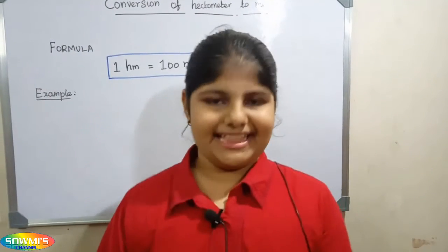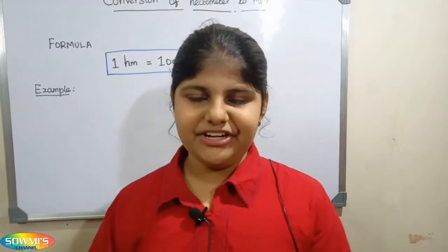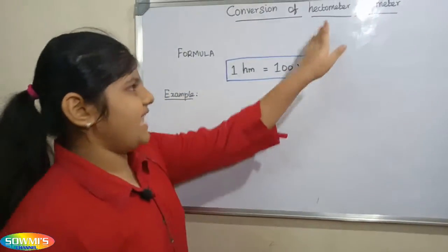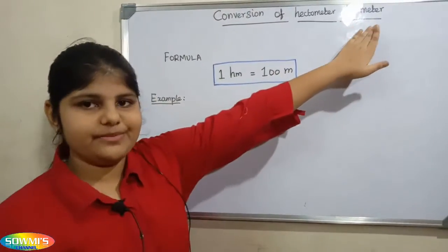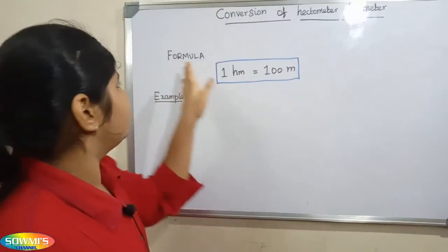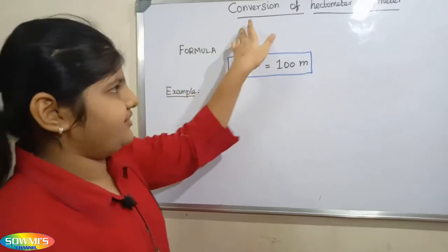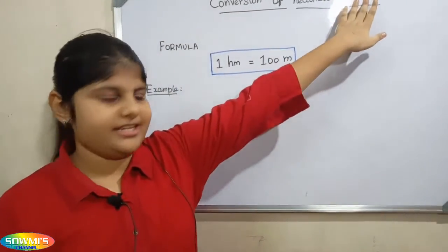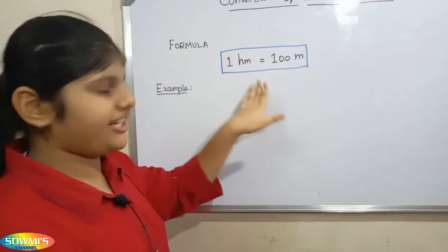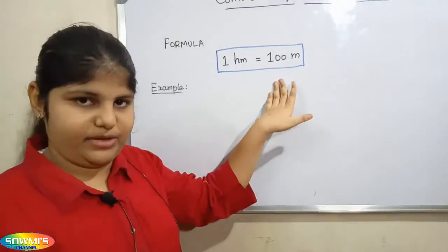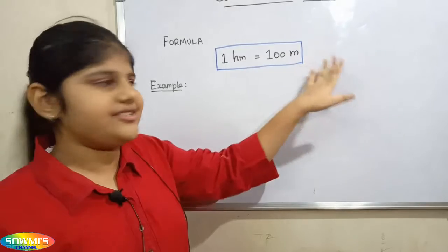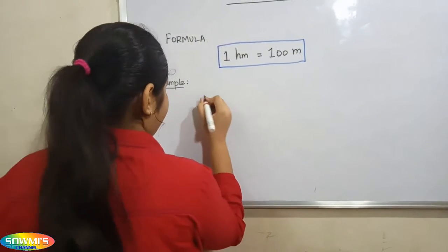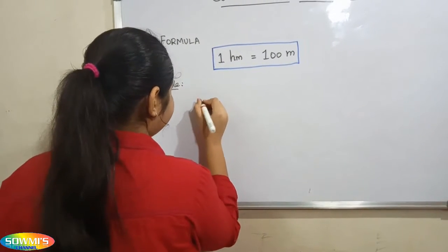Hi friends, in this video we are going to see how to convert hectometer into meter. The formula for conversion of hectometer into meter is: 1 hectometer is equal to 100 meter.